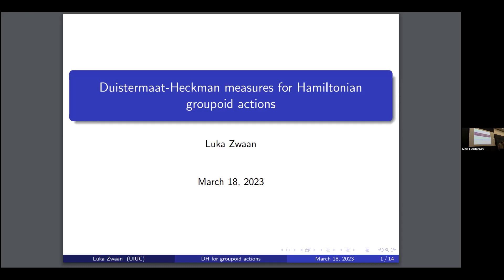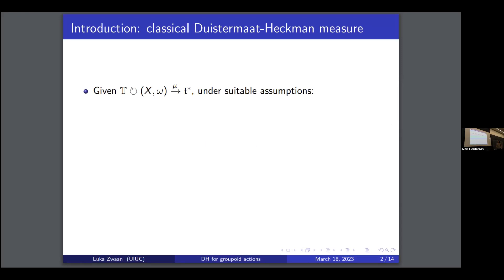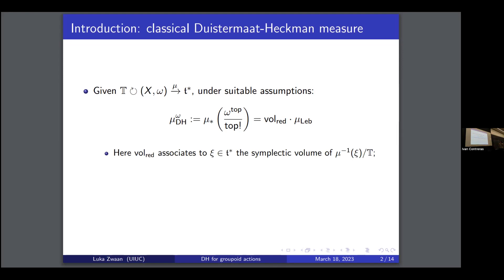The Duistermaat-Heckman measure is something that originally came up in the context of Hamiltonian torus actions. When you have such a thing, under suitable assumptions — specifically a proper moment map — and the action is locally free, then this Duistermaat-Heckman measure, which you get by pushing down the Liouville measure to T*, is a certain function times the Lebesgue measure. This function gives you the symplectic volume of the reduced space, which is a symplectic orbifold. The interesting thing is that this function is a polynomial, which follows from the linear variation result.